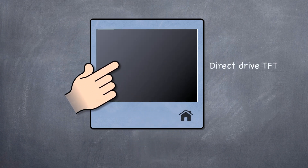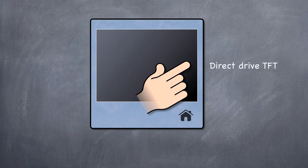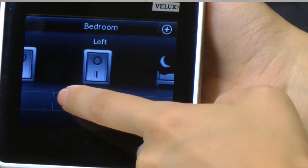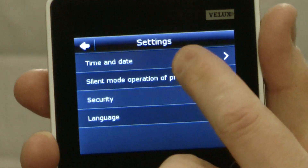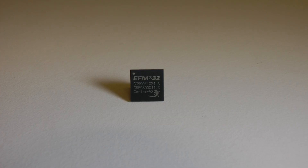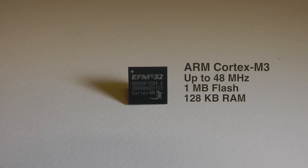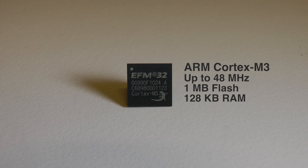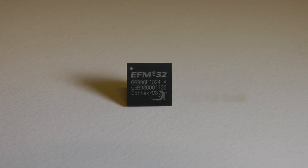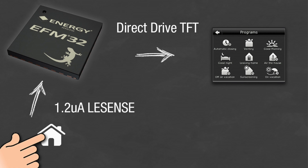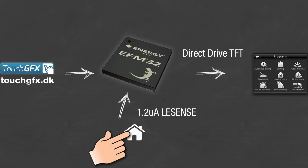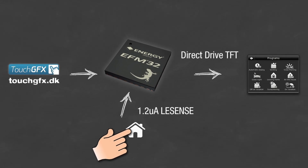Once the user interface has been activated, the display is controlled by the Giant Gecko's TFT controller. As you can see, the interface has the look and feel found in high-end smartphones. Note that it is not powered by a high-end processor, but is using the energy-friendly EFM32 microcontroller. The interface is made possible by using the Giant Gecko's large internal memory and the on-chip TFT direct drive controller.